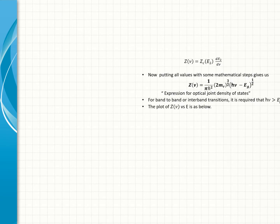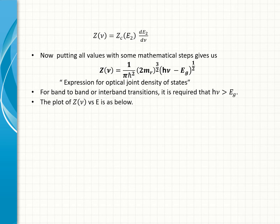Now putting all values with some mathematical steps gives us expression for optical joint density of states. For band to band or inter-band transitions, it is required that hν is greater than Eg. The plot of Z(ν) versus E is as below.